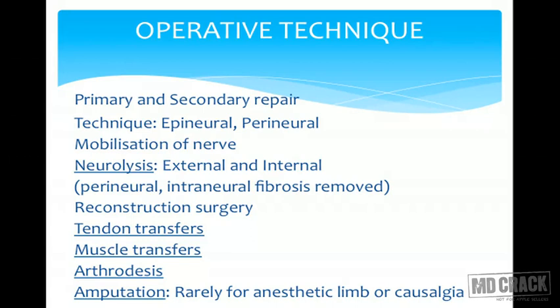There are tendon transfers and muscle transfers which are done. Arthrodesis — fusion in a functional position — is one of the last procedures. Last but not least is amputation surgery, rarely done for anesthetic limbs or causalgia, but always try to save the limb.